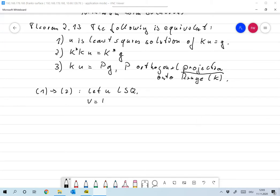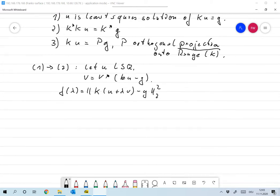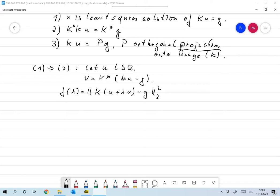Now, set v equal to k star times ku minus g, and define the function f of lambda as the norm of k times u plus lambda v minus g. Since u minimizes the norm of ku minus g, this has a minimum at lambda equals zero.